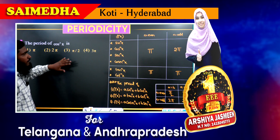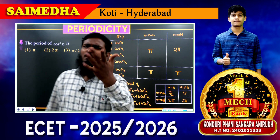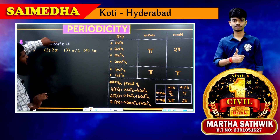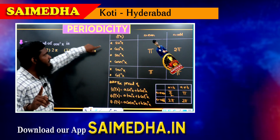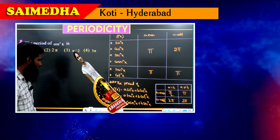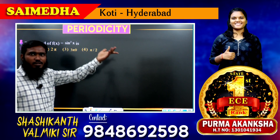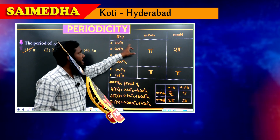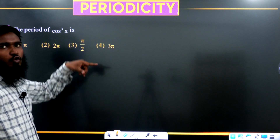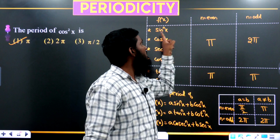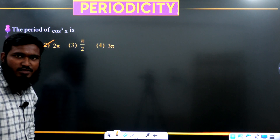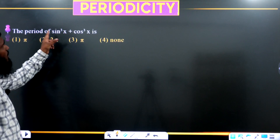Now let us solve questions using these concepts. For cos²x: n is even, so the period is π — first option is correct. For sin²x: n is even, period is π — also first option. For cos³x: n is odd, so the period is 2π — second option.